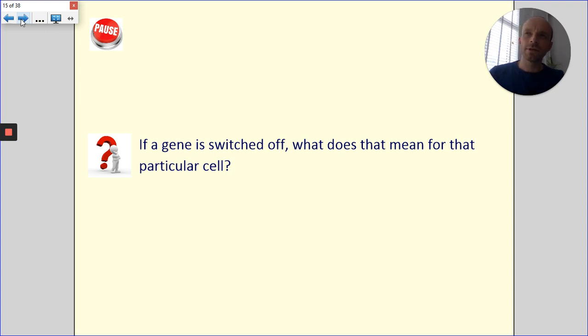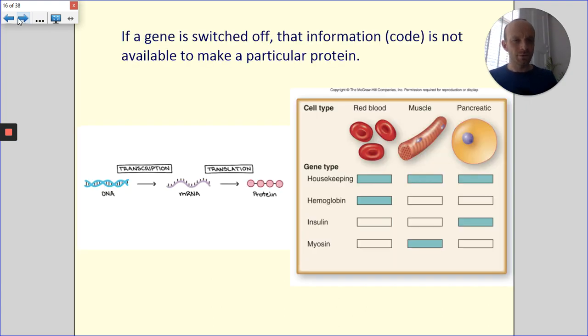So if a cell has genes switched off, what does that mean for that particular cell? How would that affect the cell and how the cell functions? And try and link this to National 5 biology. So DNA genes, if you like, they code for particular proteins.